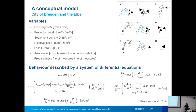We built a model to simulate this behaviour. The narrative is: a flood happens, this causes damage and raises people's awareness. Then there are two options: either people take precautionary measures, and when a flood happens again the damage will be lower because they are more prepared; or people decide to move away, in which case damage is also lower simply because the exposure is lower.